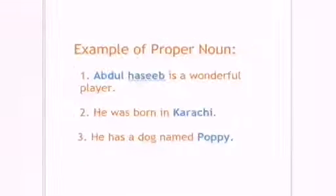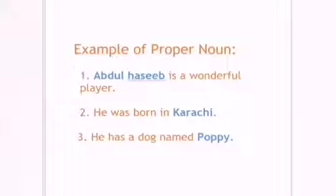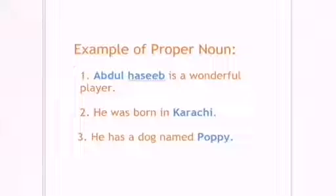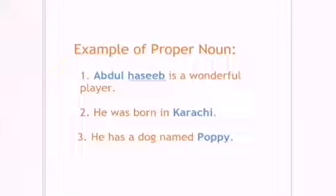Let's have a look on examples of proper noun. Abdul Haseeb is a wonderful player. He was born in Karachi. He has a dog named Popi. The proper nouns are Abdul Haseeb, Karachi and Popi. We write them with capital letters.